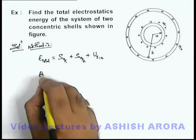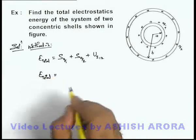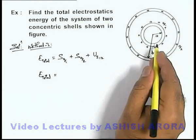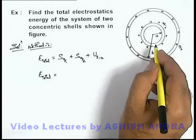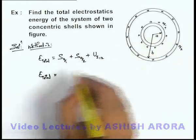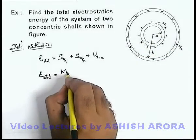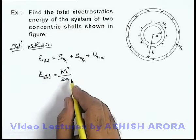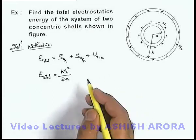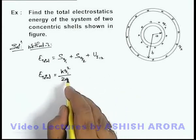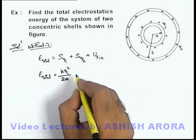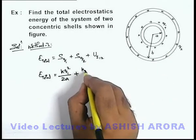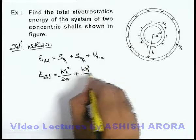The total energy can be directly written as follows. The self energy of shell q1 — it is a hollow sphere having charge q1 uniformly distributed on the shell of radius a — can be written as k·q1²/2a. We already studied that the self energy of a hollow or conducting uniformly charged sphere is k·q²/2r. Similarly, the self energy of the outer shell can be written as k·q2²/2b.